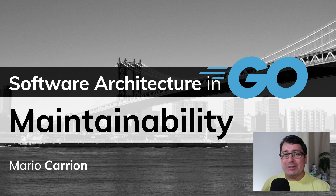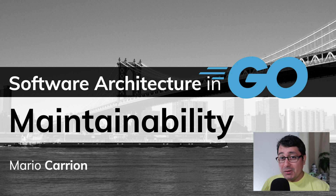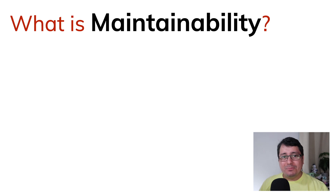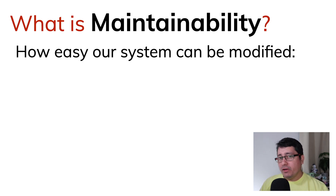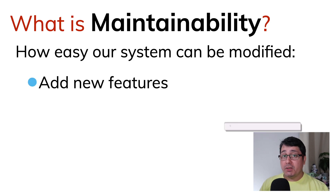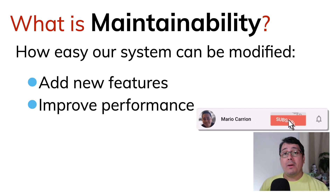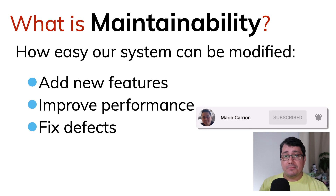Hello, my name is Mario, welcome to another Software Architecture in Go video. In today's episode we're going to be discussing maintainability. Maintainability indicates how easy our system can be modified — this means adding new features, improving performance, or fixing defects.